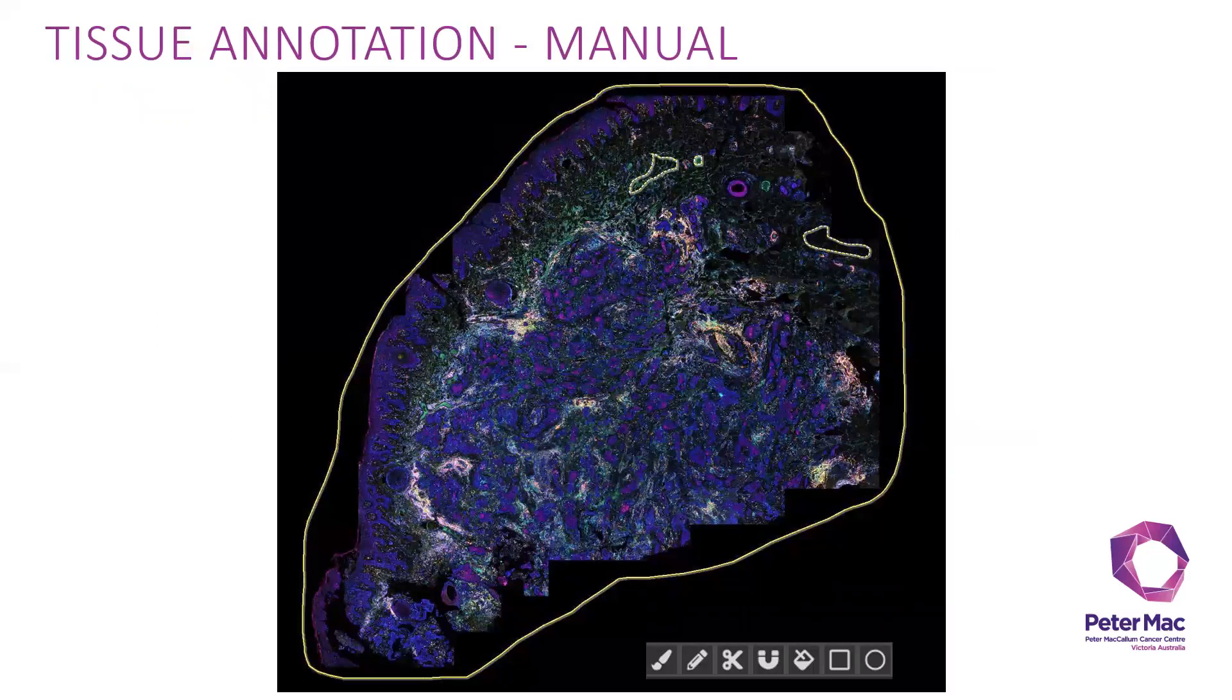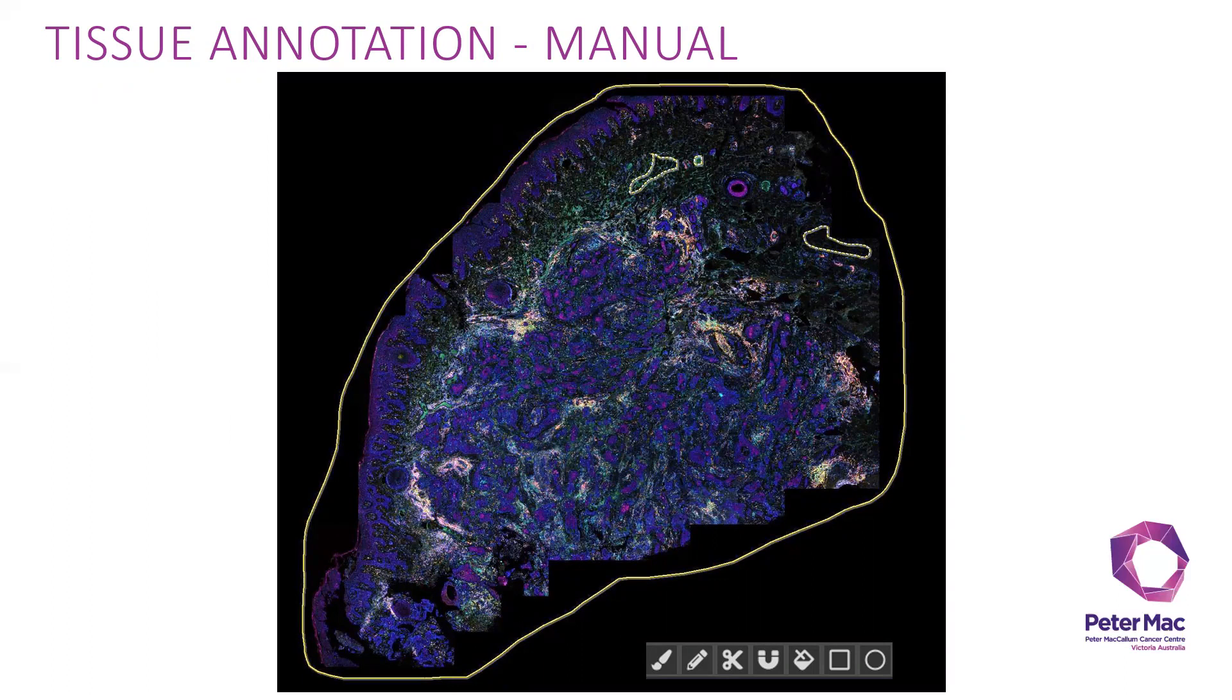Manually, in here I have drawn the annotation around the tissue as shown with the solid yellow line. And I have drawn a couple of areas that I would like to exclude from the analysis as shown with the yellow marching ant line here.